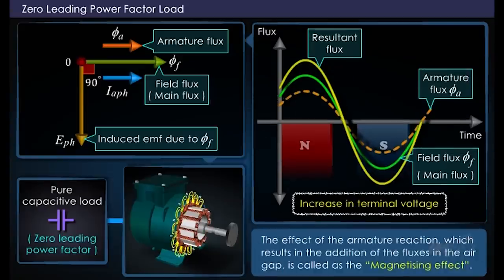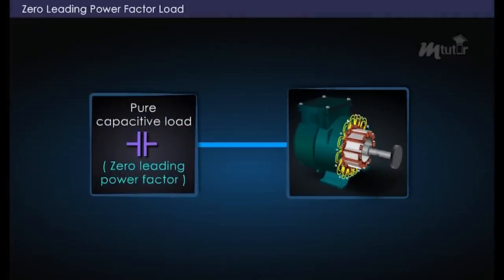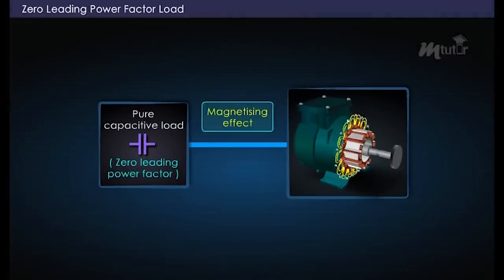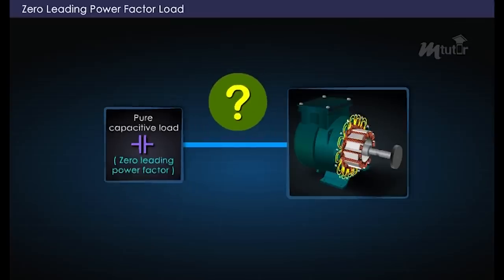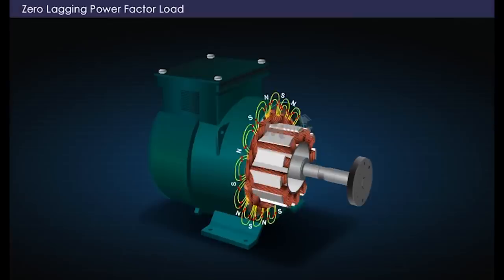Such an effect of the armature reaction, which results in the addition of fluxes in the air gap, is called the magnetizing effect. Thus, a pure capacitive load results in the magnetizing effect of armature reaction.